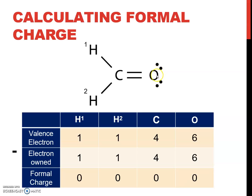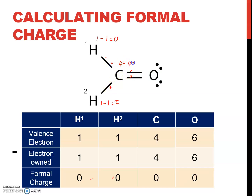Next example. We look at this compound. First, for hydrogen: 1 valence electron minus 1 electron shared by hydrogen equals 0. For hydrogen 2, same: 1 valence electron minus 1 electron owned gives 0 formal charge. For carbon, which has 4 valence electrons, minus the electrons owned by the carbon atom — counting 1, 2, 3, 4 — so 4 minus 4 is 0.